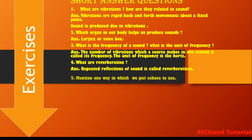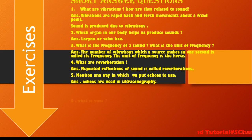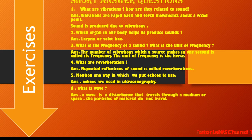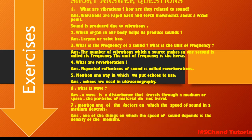Vibrations are the repeated back and forth motion about a fixed point. Mention one way in which acoustics are put to use — acoustics are used in ultrasonography, that is, to take internal pictures of different organs. A wave is a disturbance that travels through a medium or space; the particles of the medium do not travel. The speed of sound in a medium depends on the density of the medium.